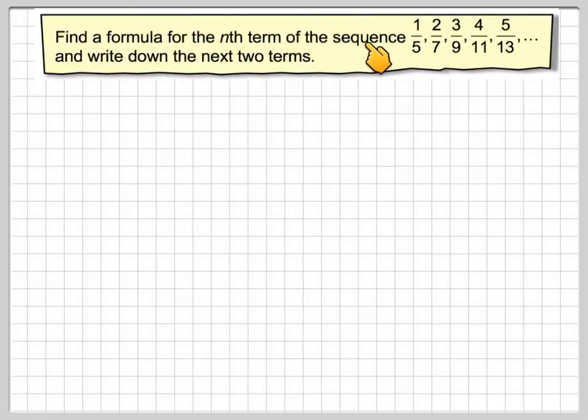Find a formula for the nth term of the sequence: 1/5, 2/7, 3/9, 4/11, and 5/13, and write down the next two terms.